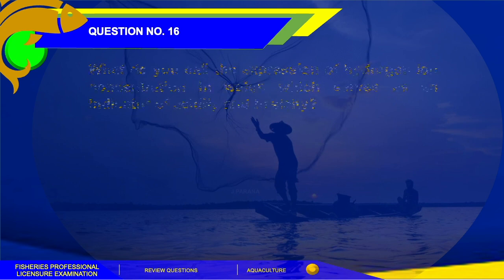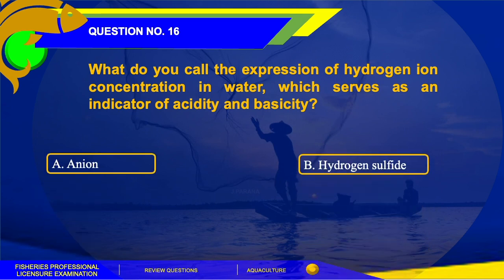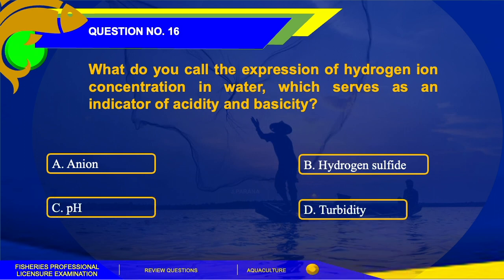Number 16. What do you call the expression of hydrogen ion concentration in water which serves as an indicator of acidity and alkalinity? The options are: A. Ion, B. Hydrogen sulfide, C. pH, or D. Turbidity.